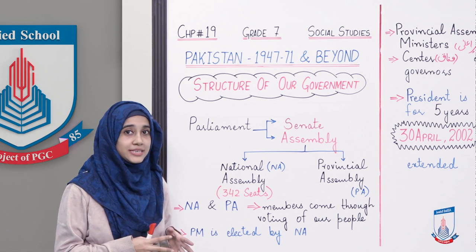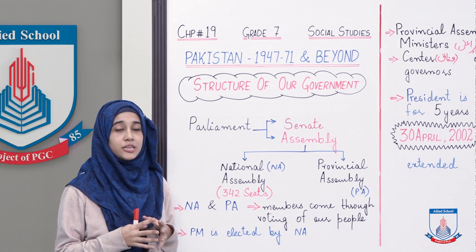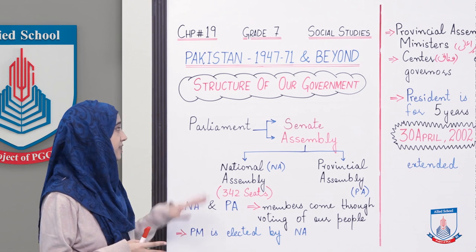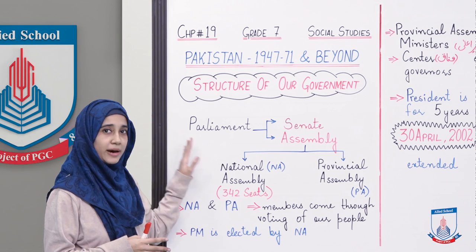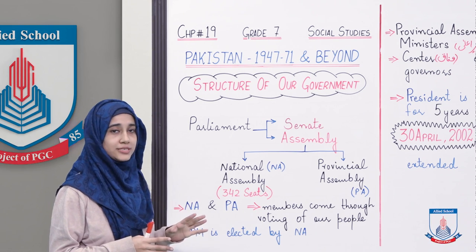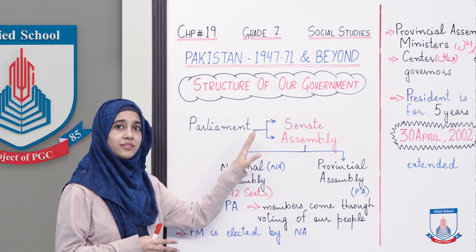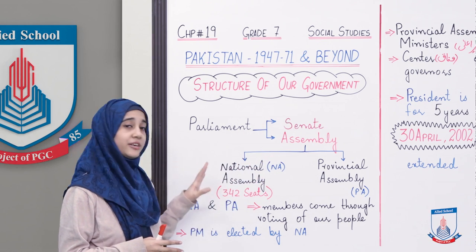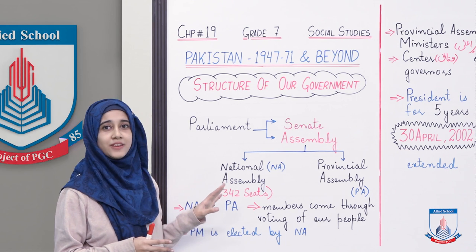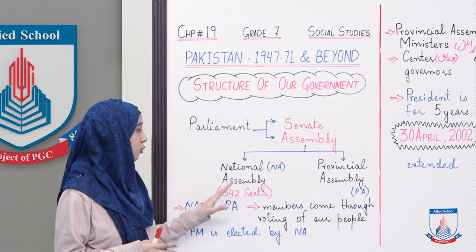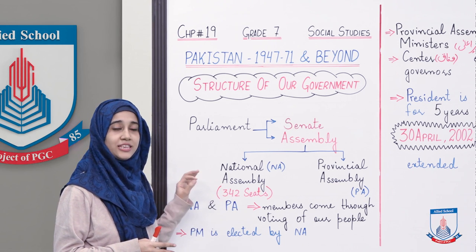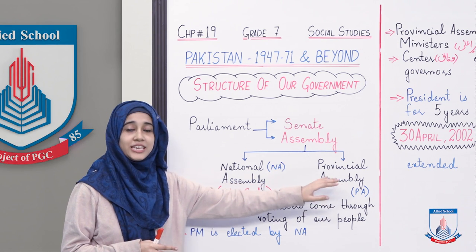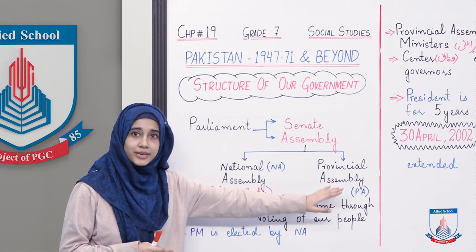Toh bacho ek baar phir se mein sab kuch aap ke liye review kar rahi hun, because it is usually difficult to understand. Hamari ek parliament hai jiske doh hisse hain: one is senate and the other one is assembly. Assembly ke further kitne hisse hain? Doh. Ek national assembly yaani ke qawmi assembly, and the other one is provincial assembly, yaani ke subhai assembly.